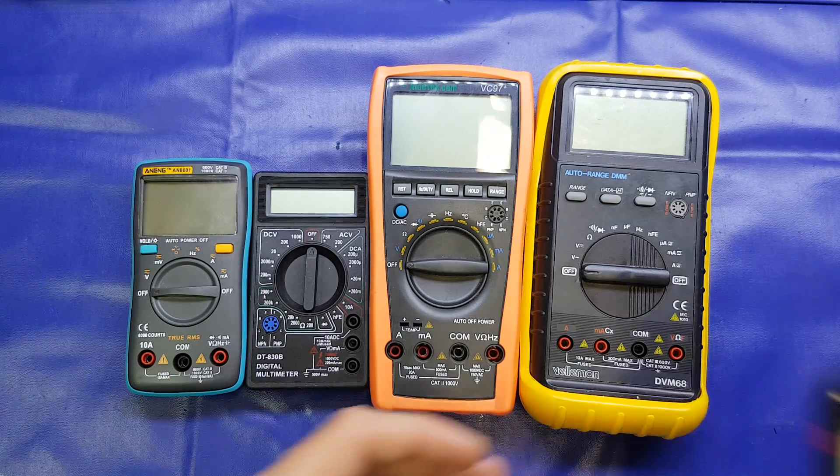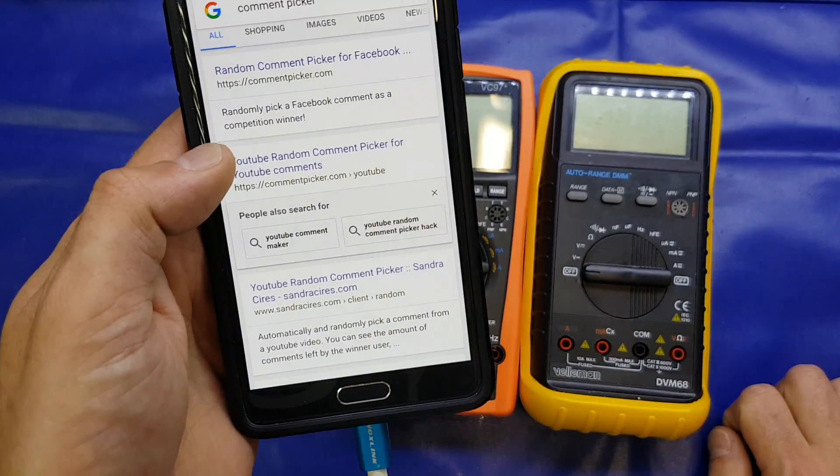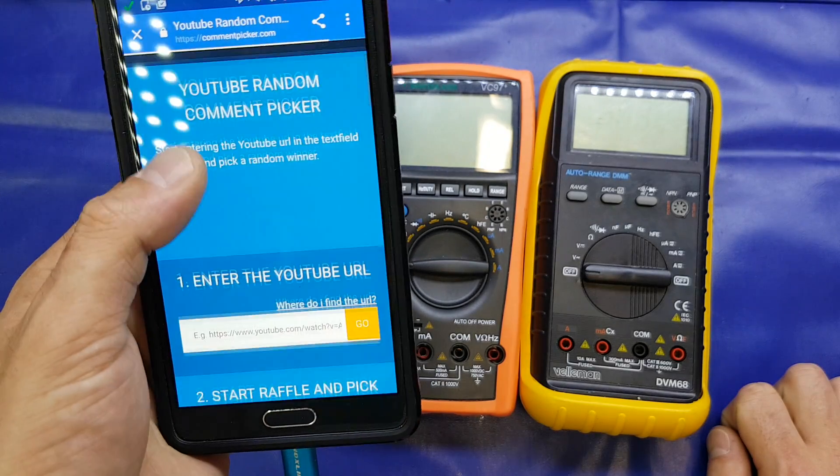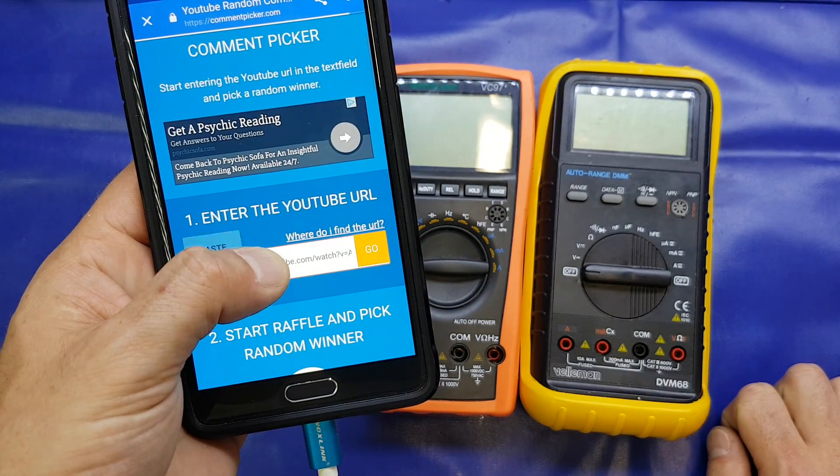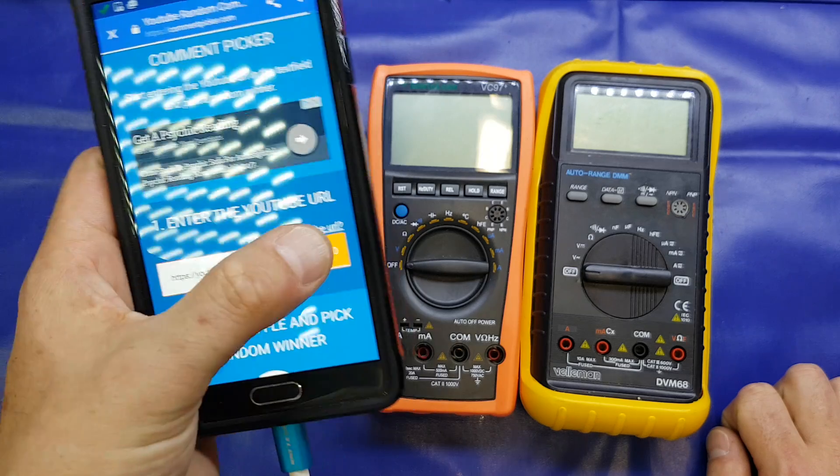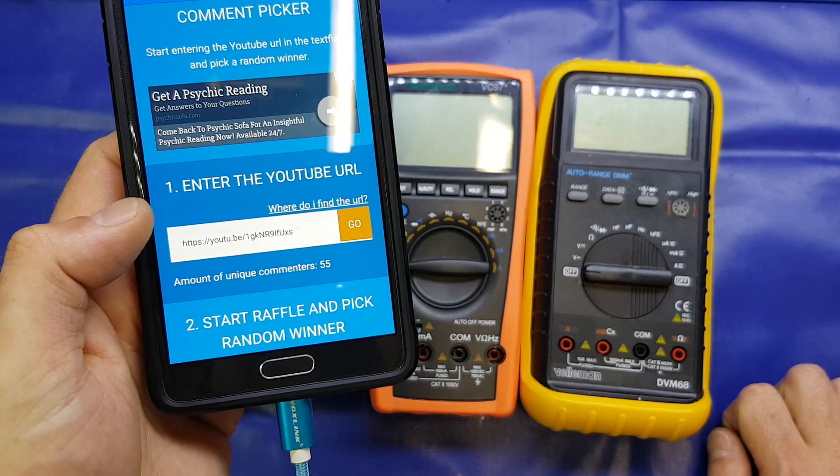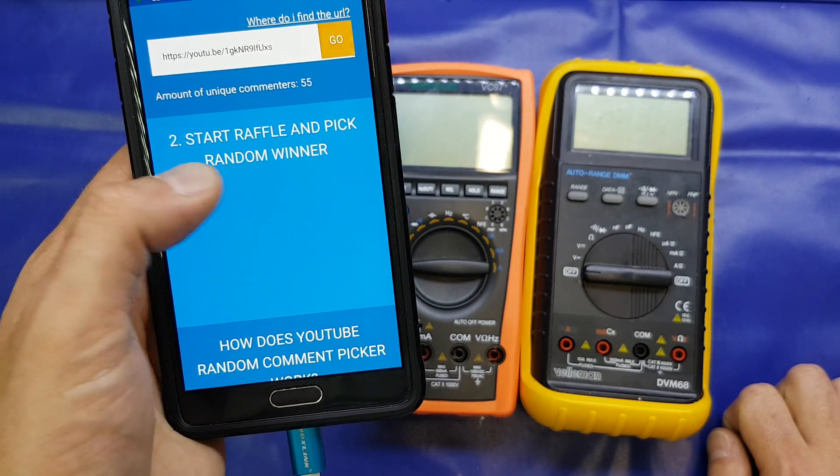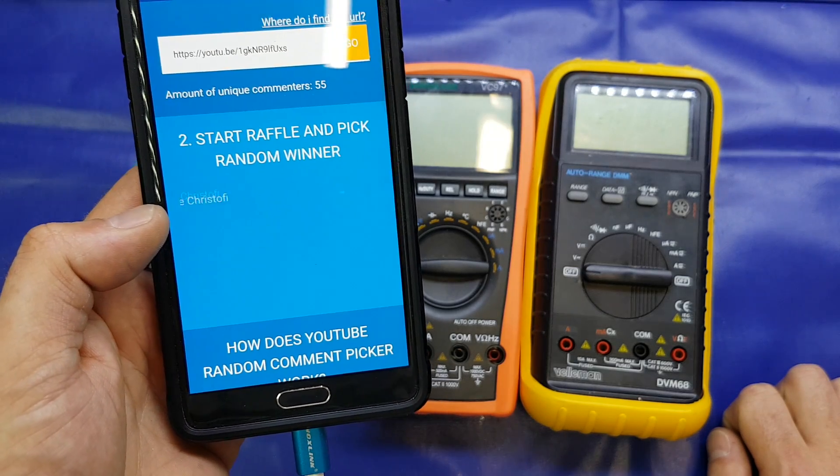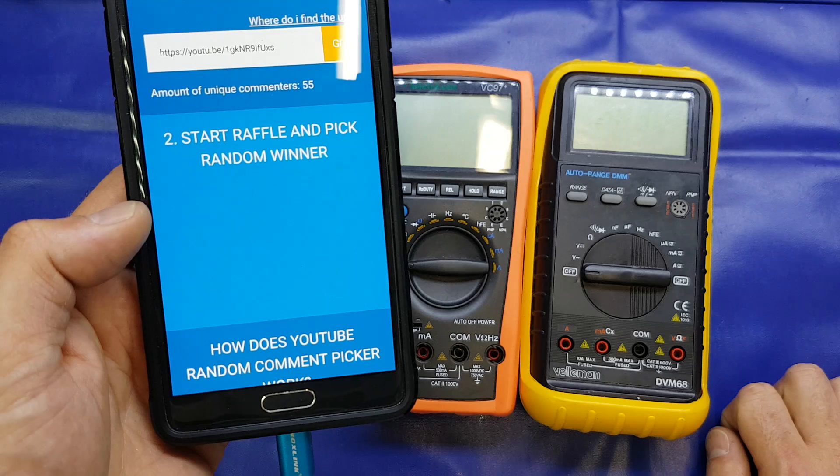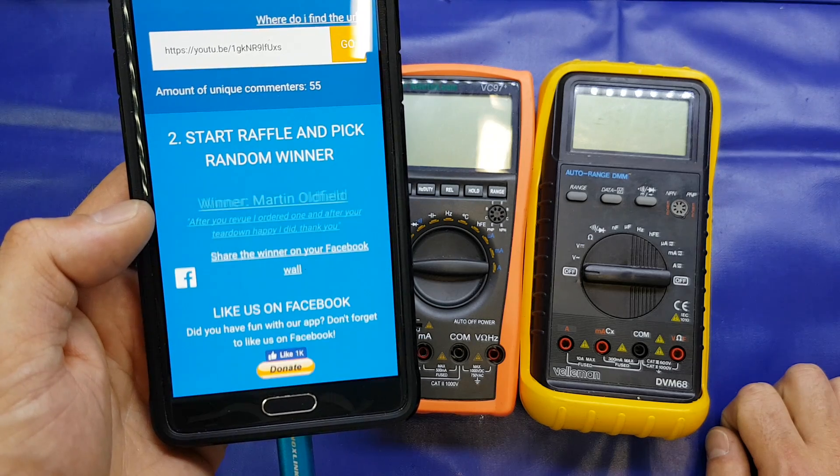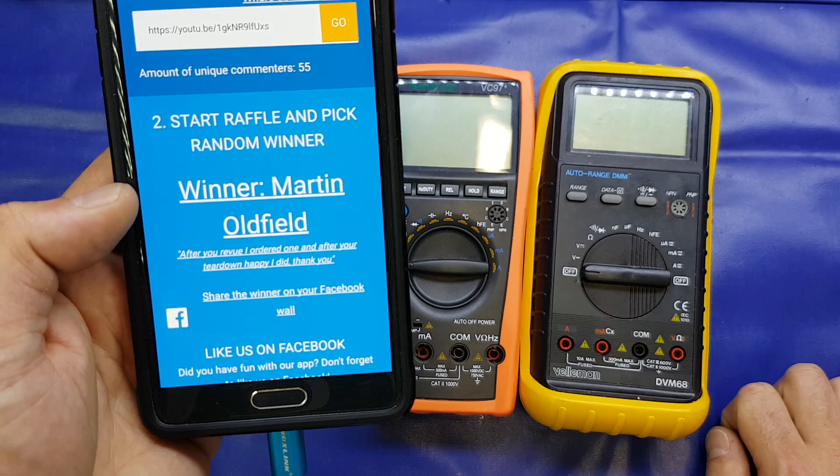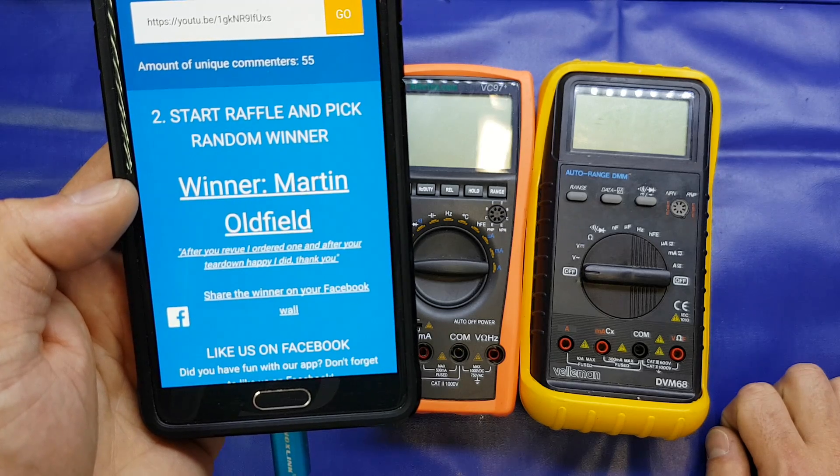But before I do that I'm going to do the price drop for competition time number 7. So we'll head on over to commentpicker.com, paste in the URL and click go and that tells me that 55 of you have entered. So we'll click start and pick a winner. Good luck to everybody that entered. And the winner is Martin Oldfield. After your review I ordered one and after your teardown happy I did. Thank you.